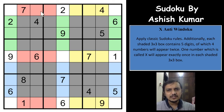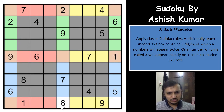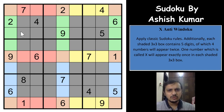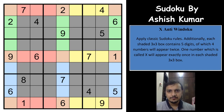Another trick is that the remaining white cells — those 9 cells — will also have to be 1 to 9 in any order. You don't need to know the order, but these cells will also have to contain 1 to 9. That is the second trick.